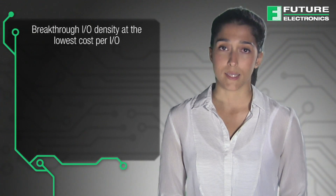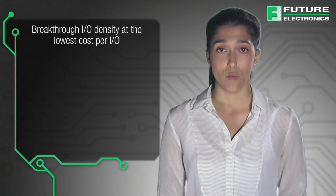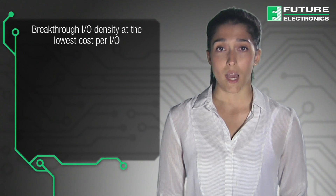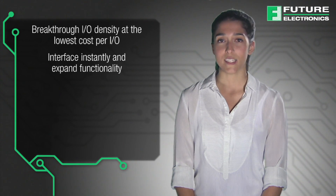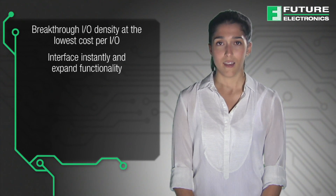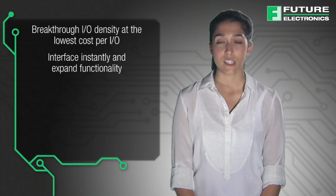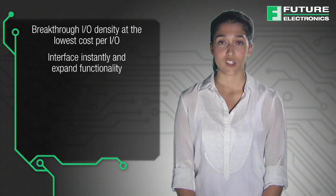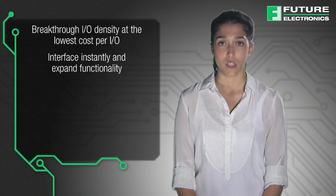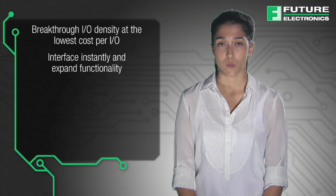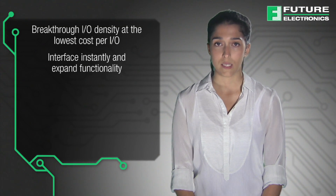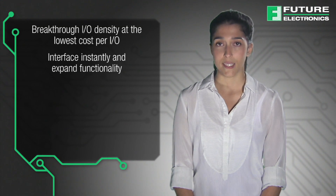Key differentiators of the Mach XO3 FPGA include breakthrough I/O density at the lowest cost per I/O — programmable bridging and I/O expansion has never been more affordable. Interface instantly and expand functionality. Customers save costs by adding instant-on GPIO and image sensor interfacing to low-cost or legacy microcontrollers using Mach XO3 devices that support SPI, I2C, CSI2, and DSI.